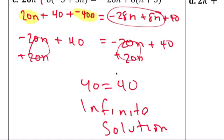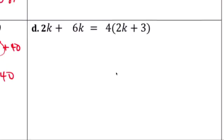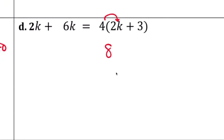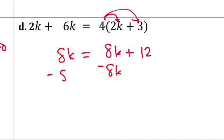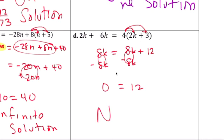Okay, and then this one here, you distribute: 8k plus 12. 8k minus 8k, minus 8k. Zero equals 12, no solution.